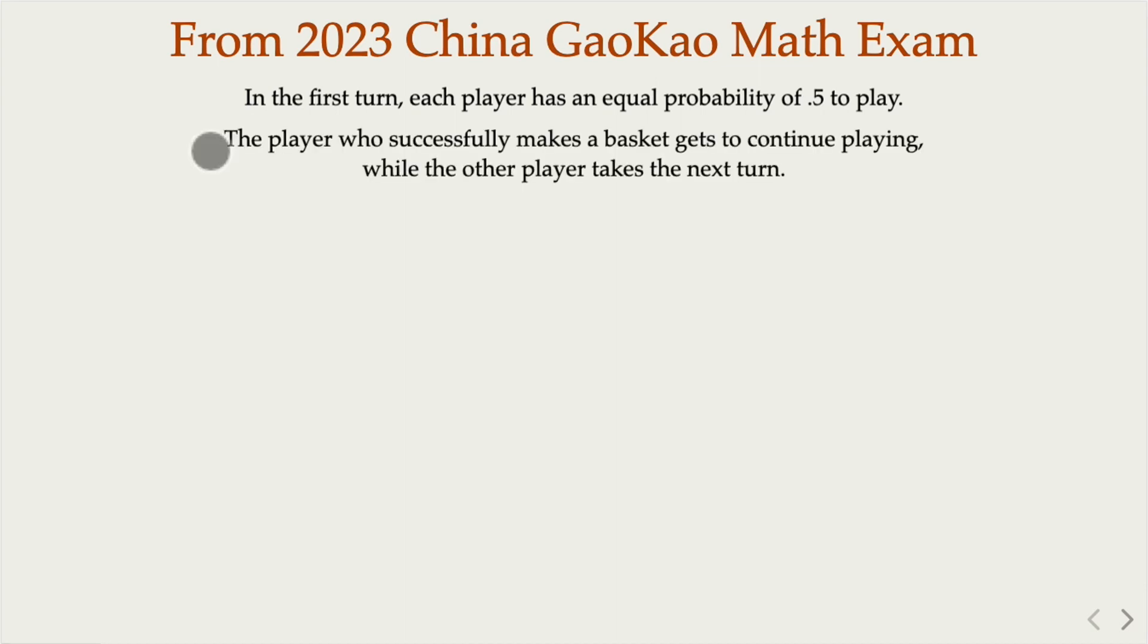Alice has 0.6 probability of hitting the basket, while Bob has a higher probability, 0.8.